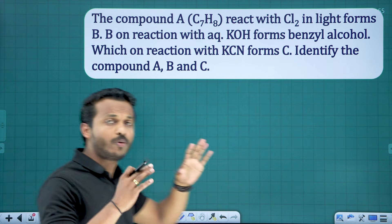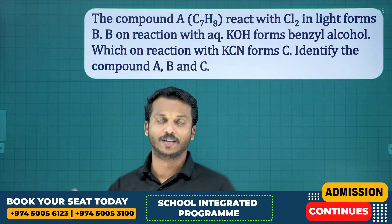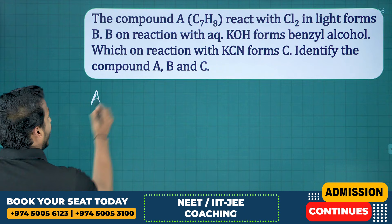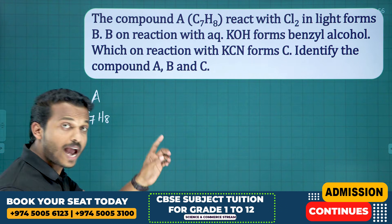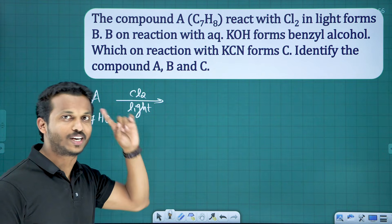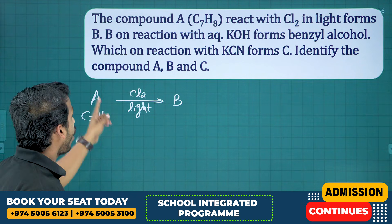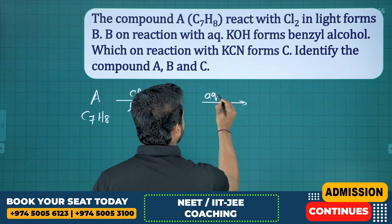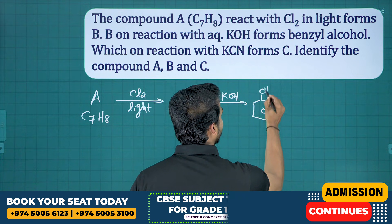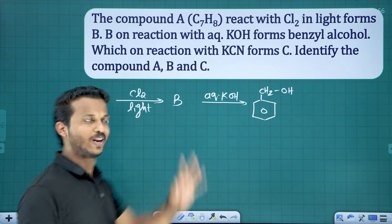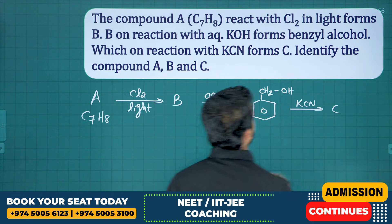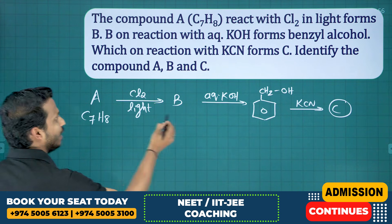Whenever you get these type of questions in paragraph pattern, please convert them into a normal format to answer very fast. Compound A has the formula C₇H₈. It reacts with Cl₂ in presence of light — that is a substitution reaction — giving compound B. B on reaction with aqueous KOH gives benzyl alcohol. Benzyl alcohol on reaction with KCN forms compound C. Identify compounds A, B, and C.